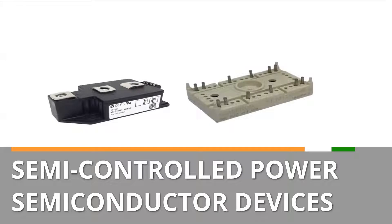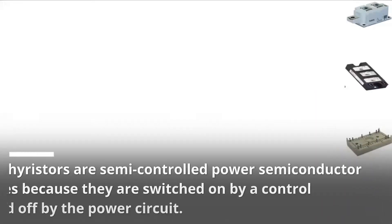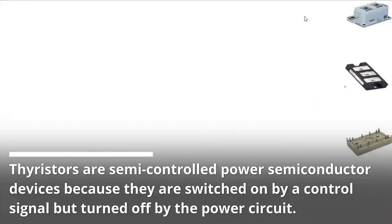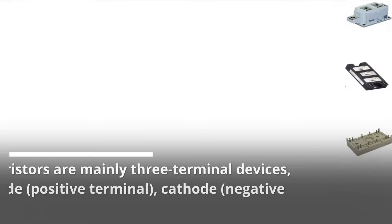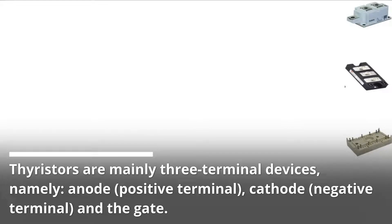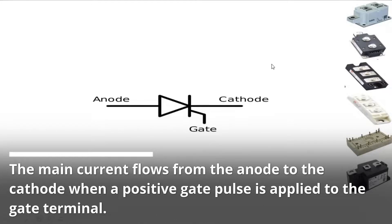Semi-controlled power semiconductor devices. Thyristors are semi-controlled power semiconductor devices because they are switched on by a control signal but turned off by the power circuit. Thyristors are mainly three-terminal devices, namely anode (positive terminal), cathode (negative terminal), and the gate. The main current flows from the anode to the cathode when a positive gate pulse is applied to the gate terminal.